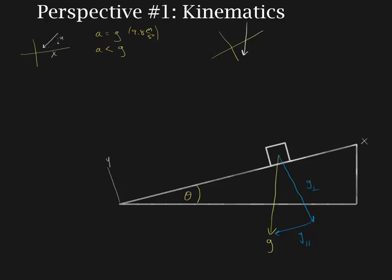So the real question for us is going to be: what is this angle? It should be obvious that there is a 90-degree angle between the components, since vector components are always at right angles to each other. It should also be obvious that there is a right 90-degree angle where gravity points straight down, perpendicular to the X axis and parallel to the Y axis before we rotate the coordinate system. So we have this remaining angle, which I'll call beta. The question becomes: is this angle theta or beta?